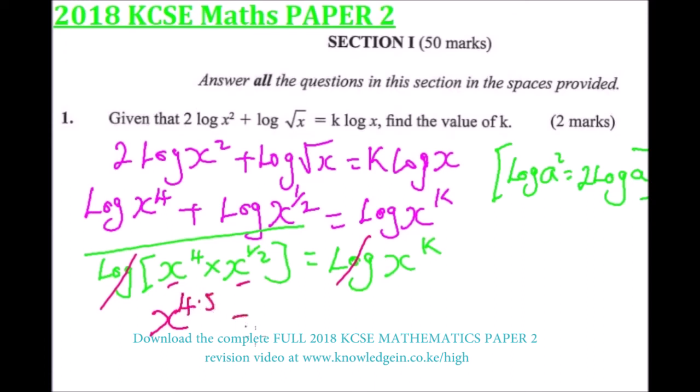Because now we have the same base, which is x, it implies that our k equals 4.5. That is, the powers are the same.